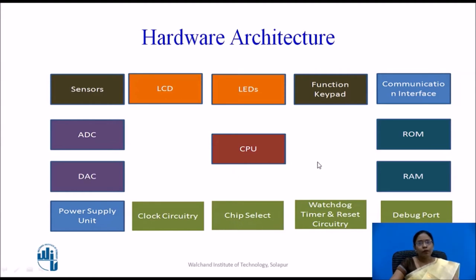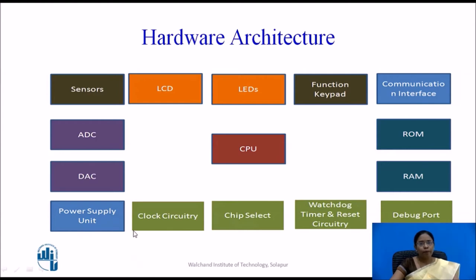Chip select allows the processor to identify a particular peripheral among the many it is connected to. The clock circuitry supplies a clock signal to a pin on the processor; all events happen on the clock, and higher clock frequency means a faster processor. The power supply unit provides stabilized DC power — at +12V, +5.5V, -5V, and +3.3V — to all elements of the embedded system.